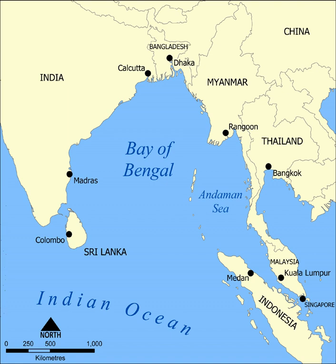Cellular Jail, known as Black Waters, was built in 1896 on Ross Island, part of the Andaman Island chain. As early as 1858, this island was used as a British penal colony for political prisoners facing life imprisonment.